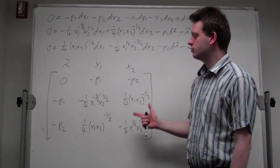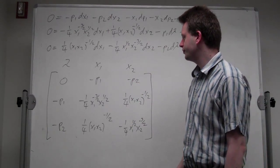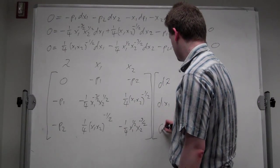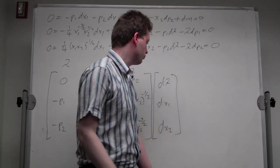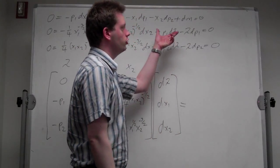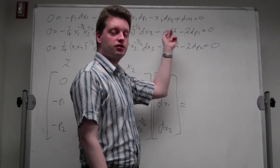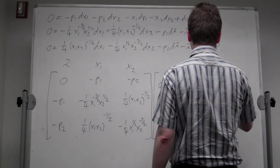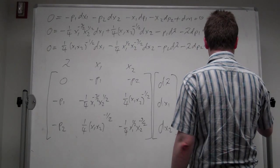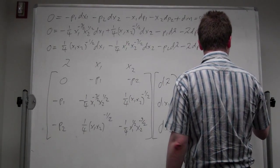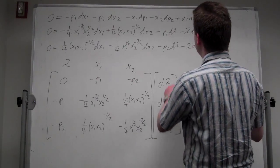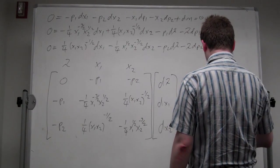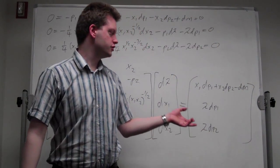This matrix happens to be the bordered Hessian of the optimization problem. We can put down the vector of d_lambda, dx1, and dx2. Then we write down the right-hand side vector with all exogenous variables: the first element is x1*dp1 plus x2*dp2 minus dm, the middle is plus lambda*dp1, and the bottom is lambda*dp2, which completes our system of equations.